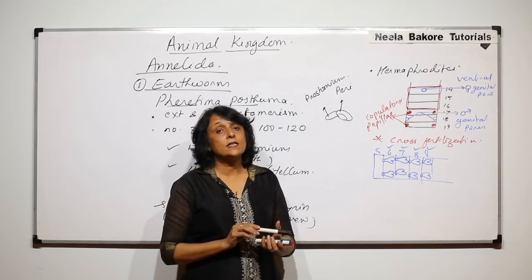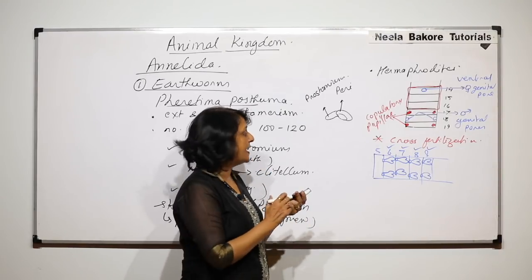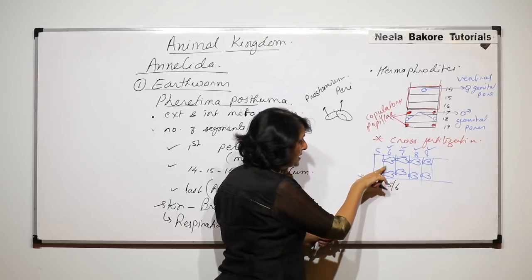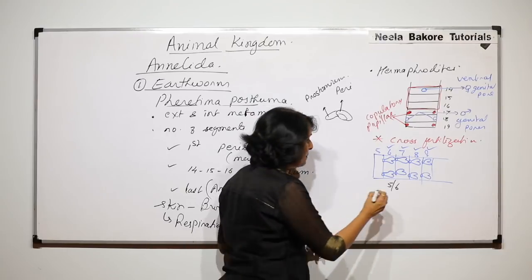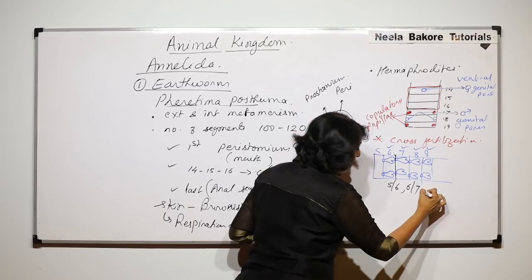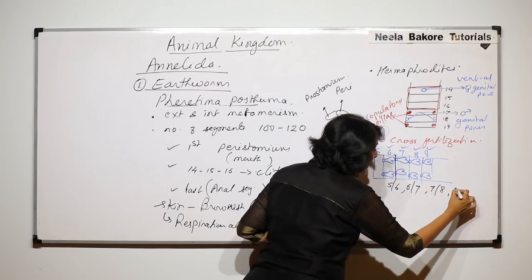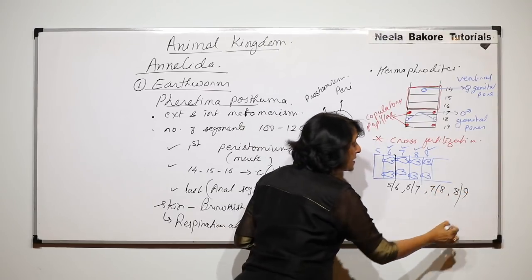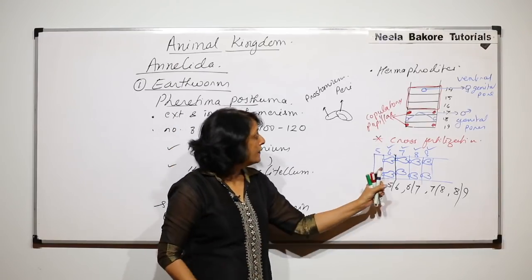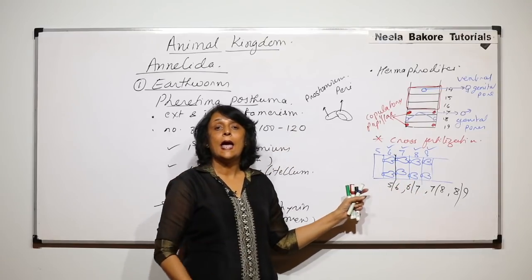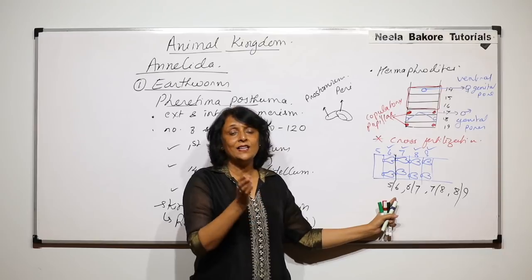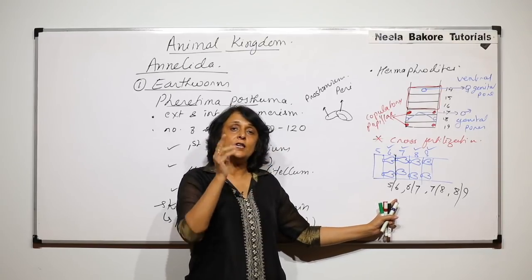Questions on this topic can be tricky. If the location of the spermatheka (the sac itself) is asked, the answer is segments 6, 7, 8, and 9. But if the spermathecal pores are asked, the answer uses a slash notation — 5/6, 6/7, 7/8, and 8/9 — indicating they are on the septum between those segments.